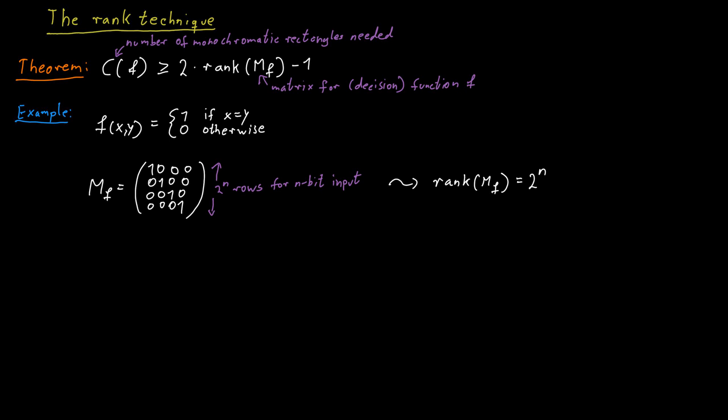The rank of the matrix is 2 to the n, so we get 2 times 2 to the n minus 1, minus 1 many rectangles at least. That's 2 to the n plus 1 minus 1.